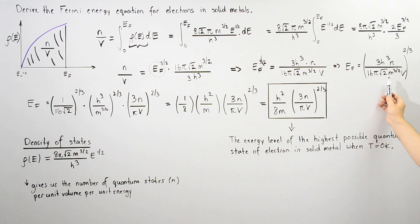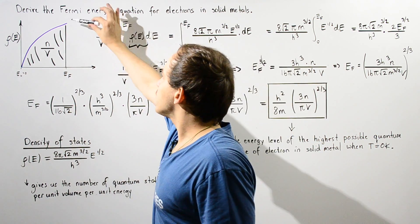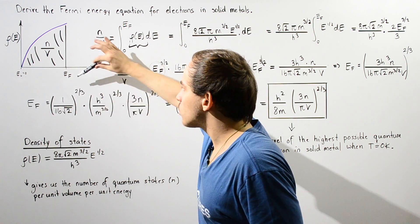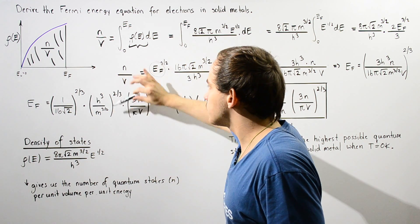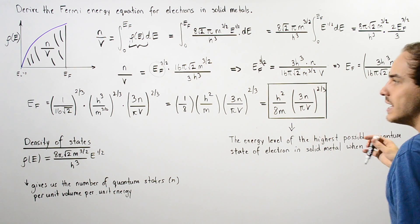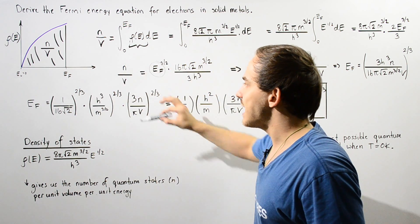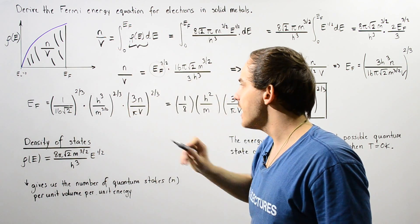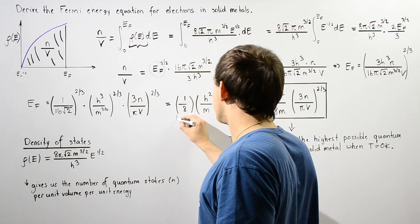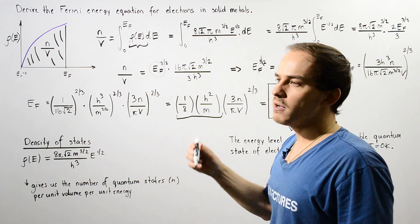We rewrite the result in a slightly different way. The Fermi energy E_F equals the following: we raise each part to the power of 2/3 — this gives us 1 divided by 8, h squared divided by m, and the remaining quantity as is. Combining these two terms, we arrive at the Fermi energy equation defined in the previous lecture, giving the Fermi energy of an electron in its highest possible quantum state inside a solid metal at zero Kelvin.